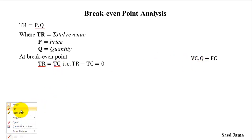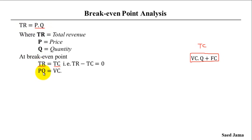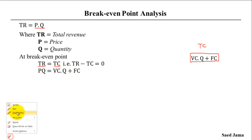We will have a slide to see this. Total revenue equals total cost. Total cost equals variable cost per unit times quantity plus fixed cost. This is the total cost equation: P times Q equals TC.